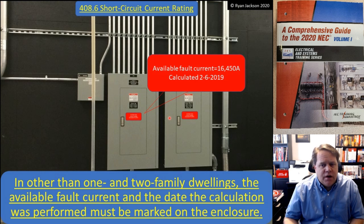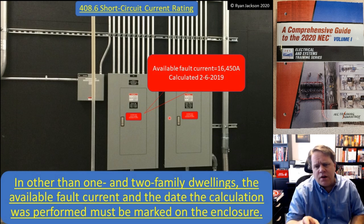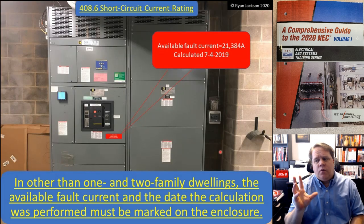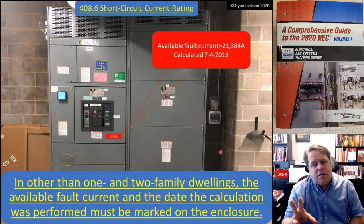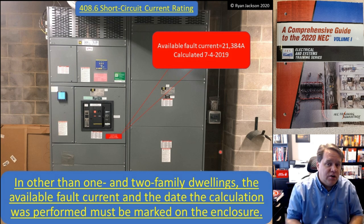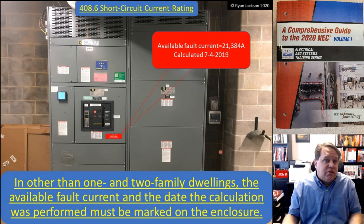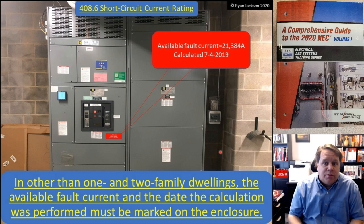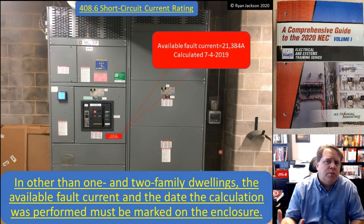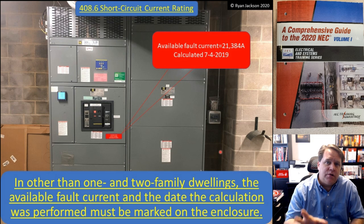I have to know the available fault current at every panel because I need to know what the short-circuit current rating of the panel needs to be. If I didn't know the available fault current was 16,450 amps, I might have mistakenly installed a panel rated only 10,000 amps. Something interesting: a lot of times when we look at a small panel we automatically assume the fault current will be rather low, and when we look at large switchgear we assume it'll be high. That's really not the case - it depends on many variables. At one application we marked 21,000 amps; it could just as easily have been 65,000 or 6,000 amps. Don't assume anything about available fault current without doing the calculation.